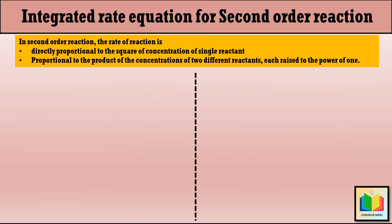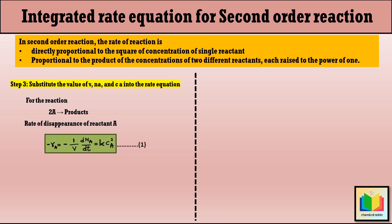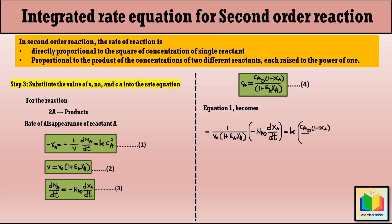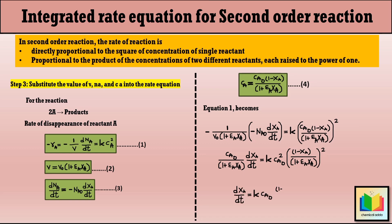Step 3: substitute the expressions for V, dNA/dt, and CA into Equation 1. The two minus signs on the left-hand side cancel, and we write CA0 in place of NA0/V0. After rearranging, we get: dXA/dt = kCA0·(1 − XA)²/(1 + εA·XA). This is Equation 5, the simplified form of the rate equation in terms of conversion.